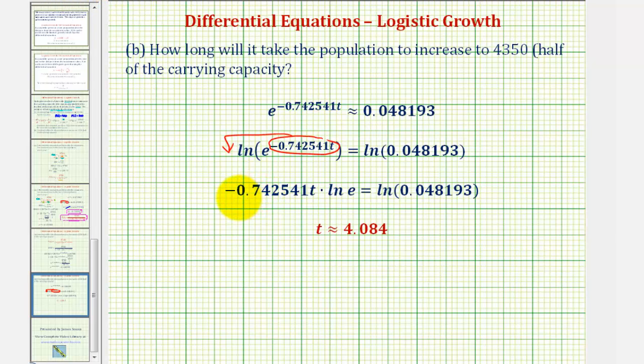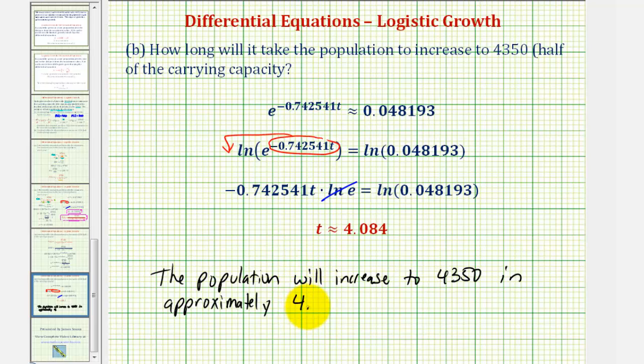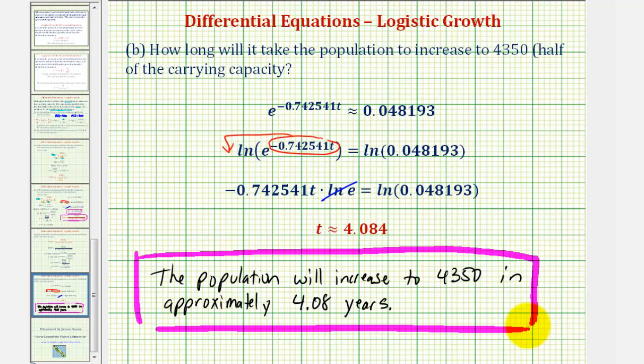If we divide both sides by -0.742541, it gives us t ≈ 4.084. So we can say the population will increase to 4,350 in approximately 4.08 years. I hope you found this helpful.